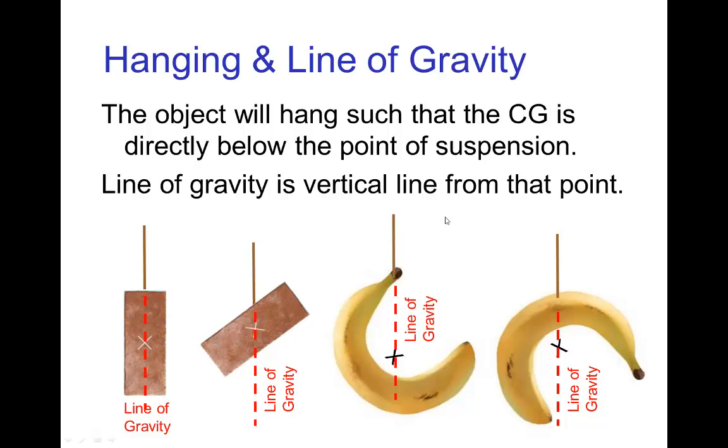Now we also know that when an object is hanging, the center of gravity is somewhere below the point of suspension. So this tells us that the line of gravity must be straight down from the point of suspension, so the line of gravity follows the same line as the rope or string or wire, whatever is holding the object up.